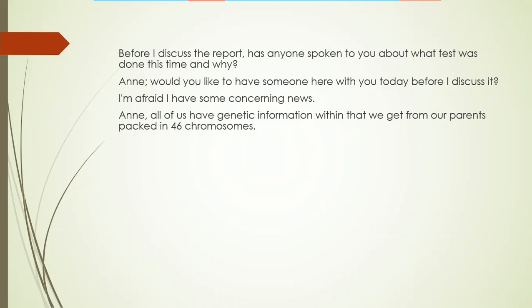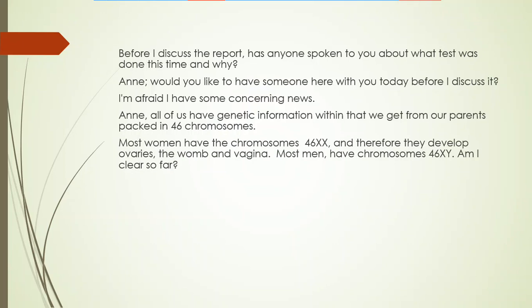All of us have genetic information that we get from our parents, that is packed in the form of chromosomes — usually 46 chromosomes. Most women have the chromosomes 46 XX and therefore they develop ovaries, the womb, and the vagina. Most men have chromosomes 46 XY. Am I clear so far?